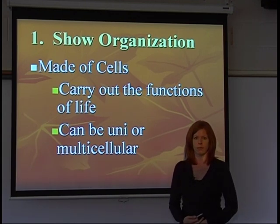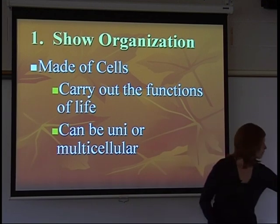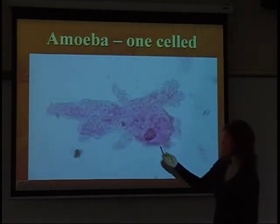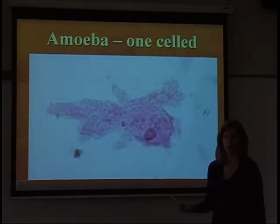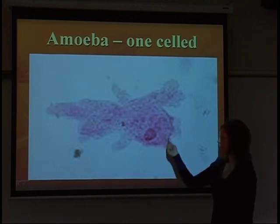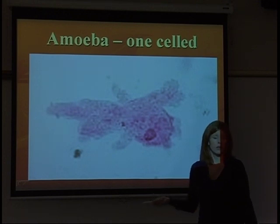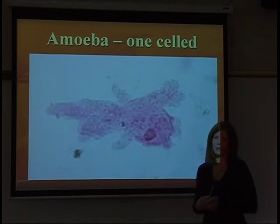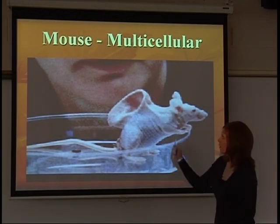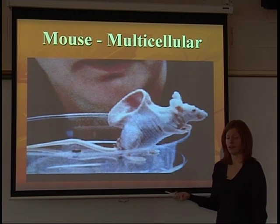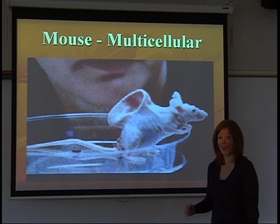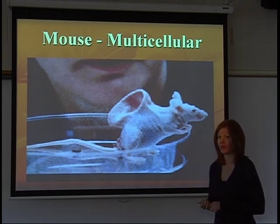Here is an example of a one-celled organism — this is an amoeba. This blob is the entire body of an amoeba; everything that makes this organism function happens within that one cell. It's a very simple organism and you would need a microscope to actually visualize it. A mouse, on the other hand, would be considered multicellular because it's made of many cells — and yes, that is an ear coming off of the mouse's back, which also shows what they're doing with scientific research.